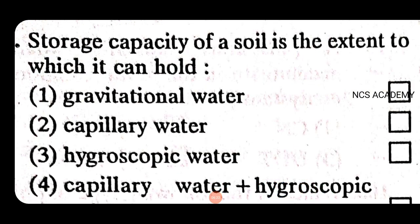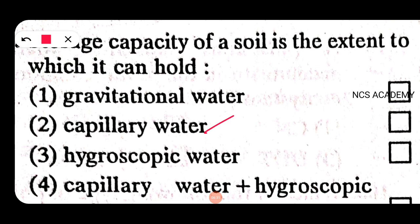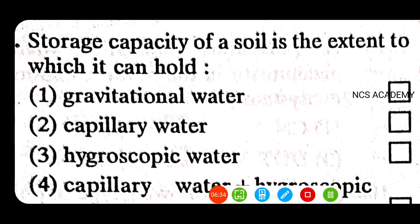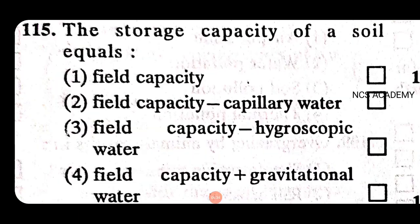Storage capacity of soil is the extent to which it can hold capillary water. The storage capacity of soil equals field capacity minus hygroscopic water — that's the right answer.